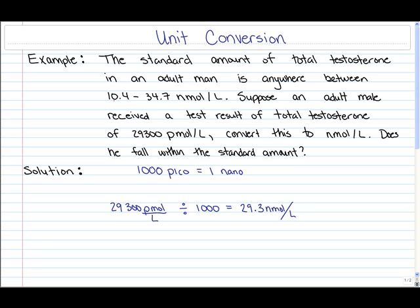If the standard amount of total testosterone in an adult male is anywhere between 10.4 to 34.7, and he received a total testosterone of 29.3, it seems to be an okay amount.